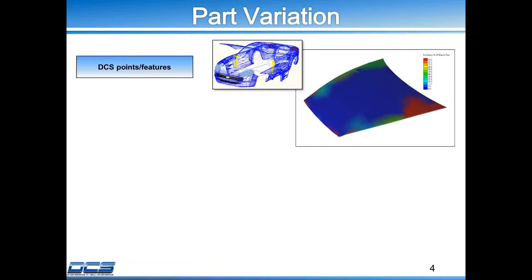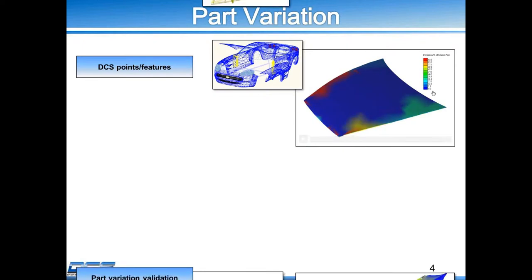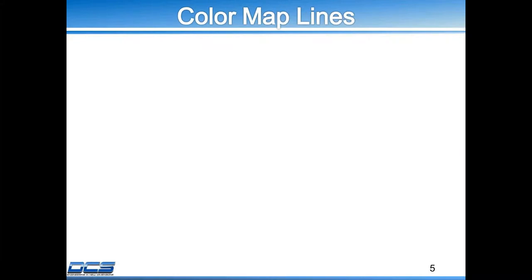The second method I want to show is part variation. Basically, let's say you have a model with DCS points and features — you want to color map based on those and see the effects of tolerances. If you look at the top right-hand corner, you'll see the hood of the model with DCS points and some tolerances, and some patches of color mapping. The red areas show the most variation and the blue areas are where it's close to nominal. You can do part variation validation in the separated position — it's not built, so you can see how the geometry of the part is moving. That's it on color map shading; I'll show you the video in a little bit.